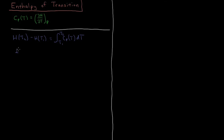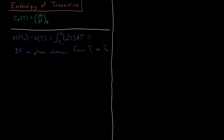But this is only true if there is no phase change between T1 and T2. So if there is a phase change between T1 and T2 — like a vaporization, a sublimation, a melting, or anything like that — then this will not be valid and we will have to use a new formula which extends to that case.